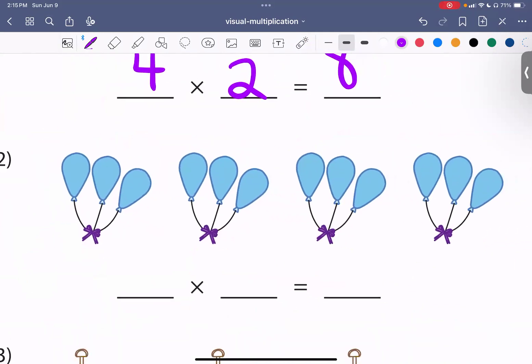So, I have blue balloons. Let me see how many sets of blue balloons I have. One set, two set, three set, four sets. So, I have four sets of blue balloons. Now, each set has one, two, three balloons.